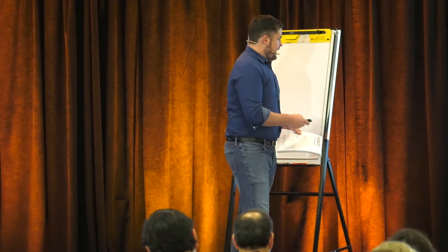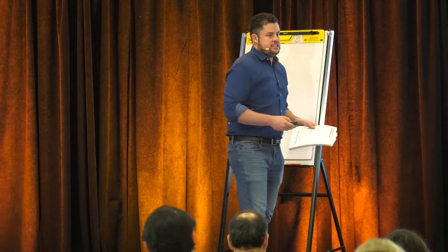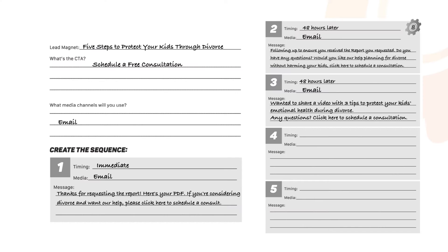It's just really stupid simple what these emails should be — nothing more than a couple of sentences, maybe two paragraphs at the most. The first one should just be: hey, thanks for downloading our report. And then something like, if you're considering divorce and want our help, click here to schedule a consultation. That's it. Super simple.